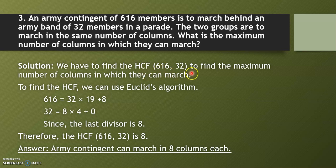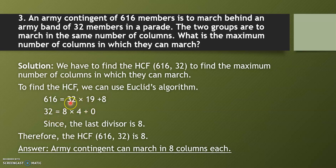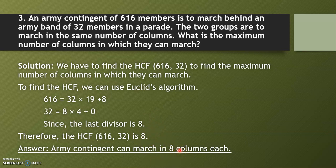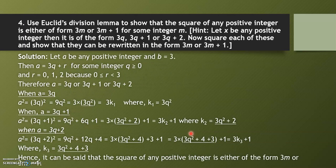We find the HCF of 616 and 32. Since 616 is greater than 32, divide 616 by 32 — quotient is 19 and remainder is 8. Then divide 32 by 8 — quotient is 4 and the remainder is 0. Since the remainder is 0, the process stops and the last divisor 8 is the HCF. So the army contingent can march in 8 columns.